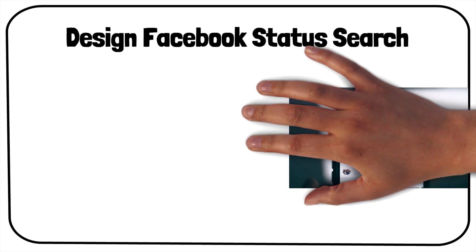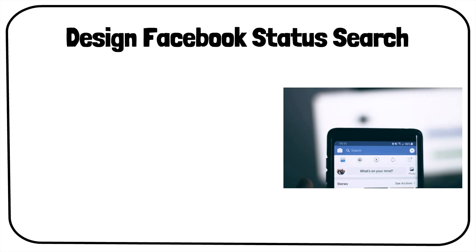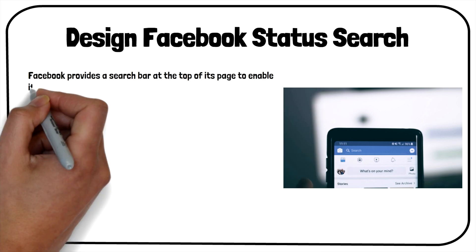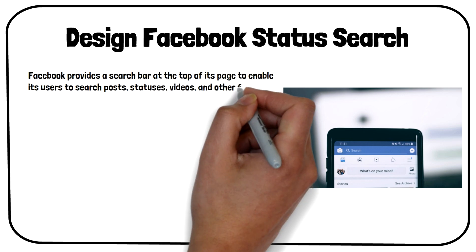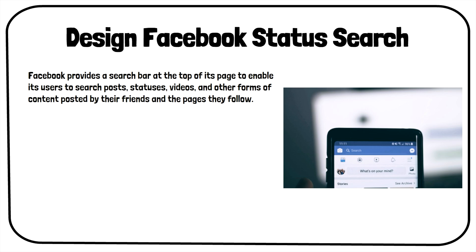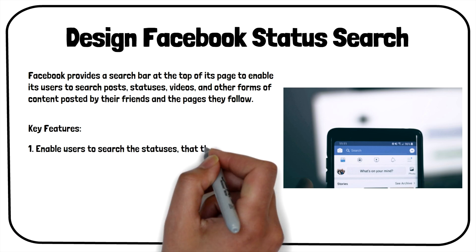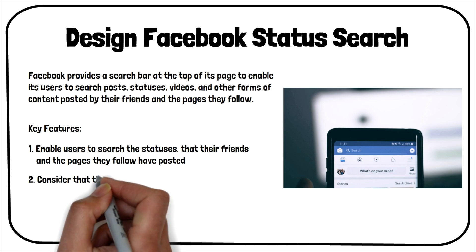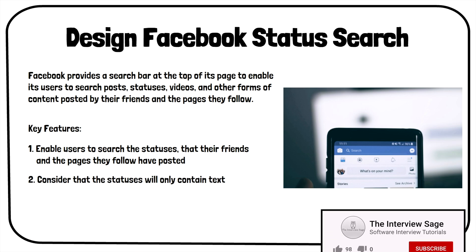Designing Facebook's status search is one of the popular system design interview questions. Facebook provides a search bar at the top of its page to enable users to search posts, statuses, videos, and other forms of content posted by their friends and pages they follow. Given that it will be a 45-minute interview round, we will be designing a system with a lower feature set. We will develop the back end to enable users to search the statuses that their friends and followed pages have posted on Facebook. We can consider that these statuses will only contain text for this particular question.